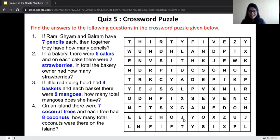Now this is our last quiz. That is a crossword puzzle. You can see here we have a crossword puzzle which we have to solve. The first question is if Ram, Shyam, and Balaram have seven pencils each, then together they have how many pencils? Ram, Shyam, and Balaram are three people, right? Three people multiplied by seven pencils. The answer is 21. Can you search for 21 in this crossword puzzle? Yes, look over here. We have 21. That is our first answer.